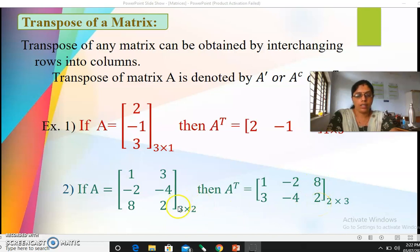So now the order again gets interchanged: three by two becomes two by three, two rows and three columns. So these two concepts are very simple. Singularity you have to check only for square matrices and transpose we can do for any type of rectangular matrices. Both concepts are very simple.